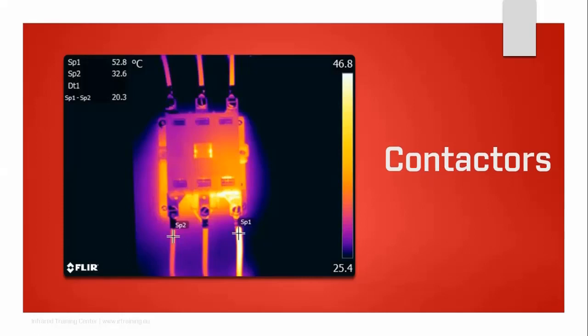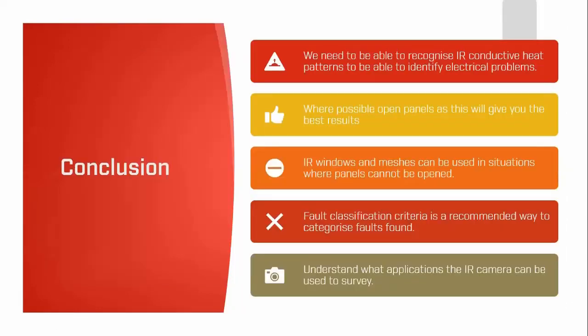To conclude: we need to recognize IR conductive heat patterns to identify electrical problems. Where possible, open panels for best results. Infrared windows and meshes can be used when panels cannot be opened — but remember to compensate for transmissivity as IR windows are not 100% transmissive. Fault classification criteria is a recommended way to categorize faults found — you can also create your own if you're competent enough. Understand what applications the IR camera can survey, and don't be afraid to look around during your survey.